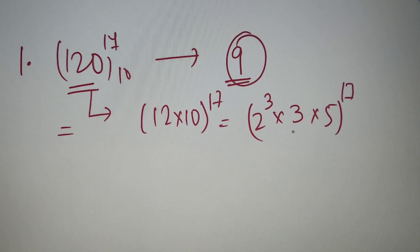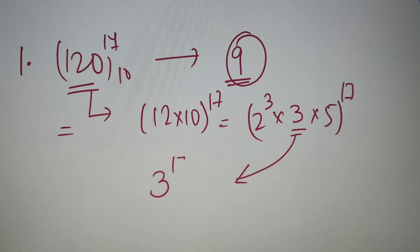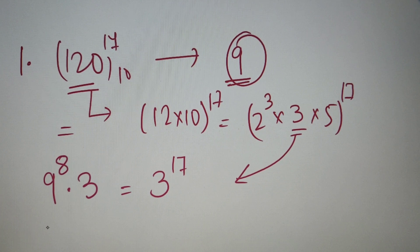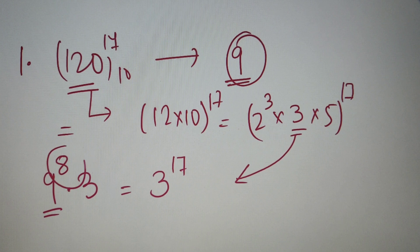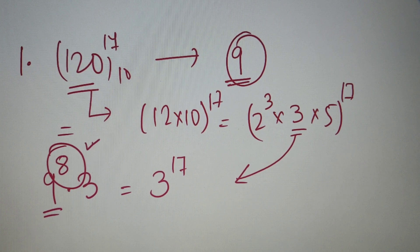Since we are only concerned with the number 9, we take out the power of 3 only. The number 3 is raised to the power of 17. Now 3^17 can also be written as 9^8 × 3. So the highest power of 9 in 120^17 is 9^8, and our answer is equal to 8. The number of trailing zeros when 120^17 is converted from base 10 to base 9 is equal to 8.